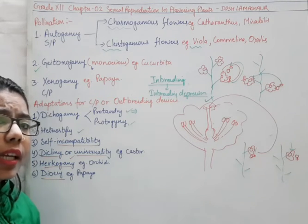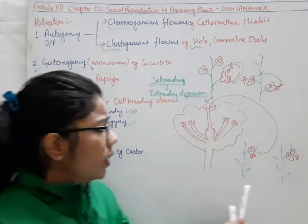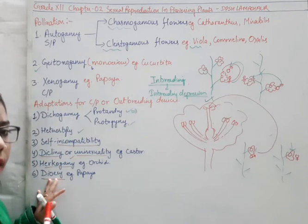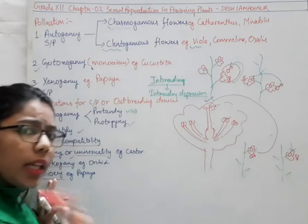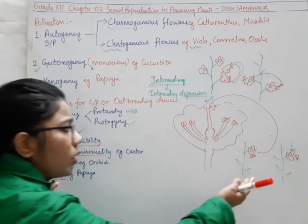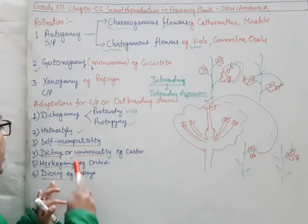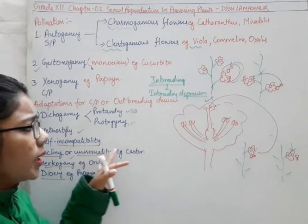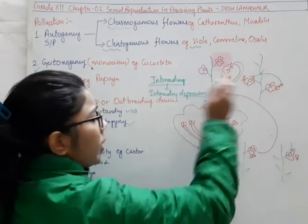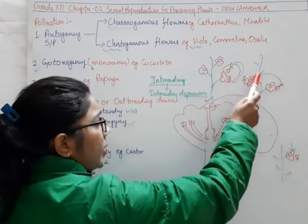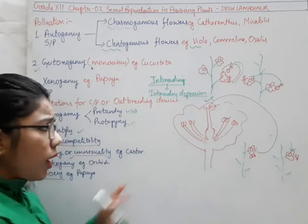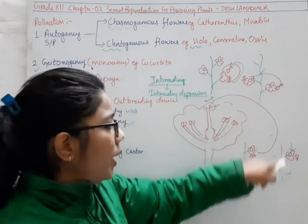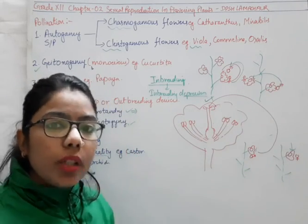Dioecy means flowers present on different plants. In the dioecious condition, there will be either male flowers or female flowers on one plant. So it ensures cross-pollination and prevents self-pollination. The difference between dicliny and dioecy is that sometimes flowers are different but on the same plant, where pollination on the same plant is possible. But in dioecy, different flowers are on different plants, which leads to good recombination.